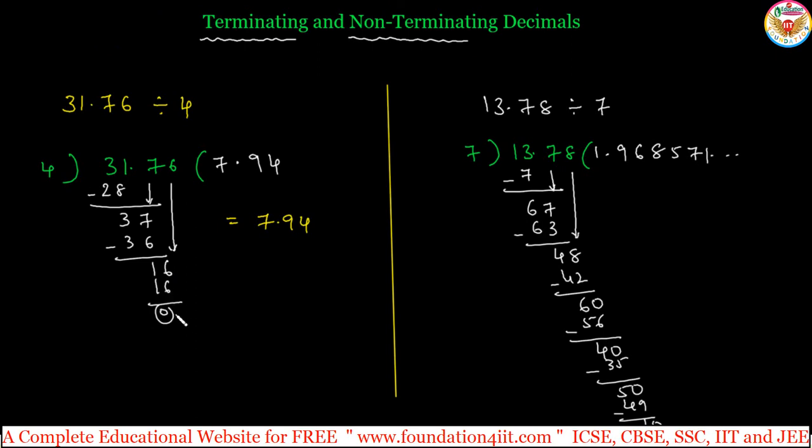These types of examples come under non-terminating decimals. After doing certain steps, we got the 0, but it is not 0. These examples come under non-terminating. Even in non-terminating, we have one more type: recurring or repeating decimals. We will see now. Continuation of non-terminating, what is the recurring or repeating decimals.